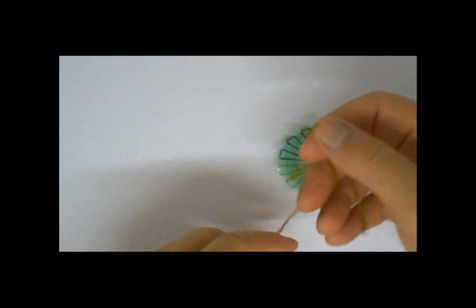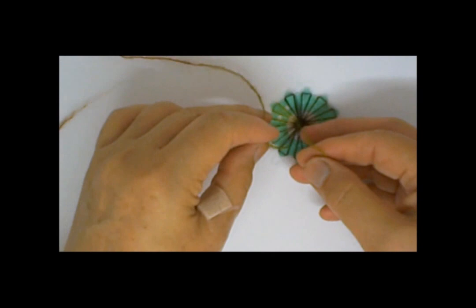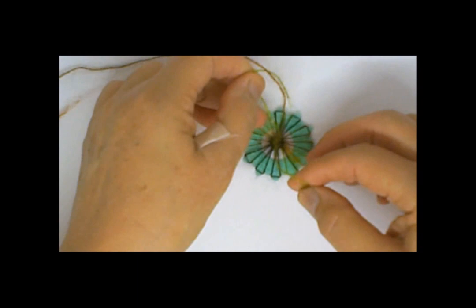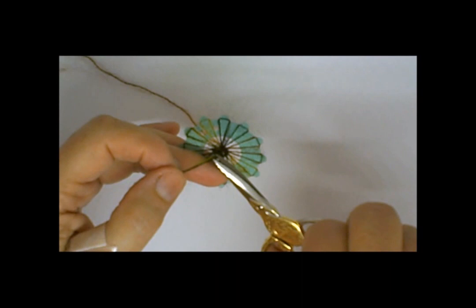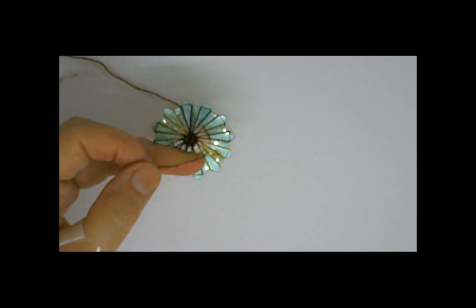Then we're going to tie a knot to secure it. This is mohair, so it's a bit grabby. Apologize if that's moving around a lot. Then we're going to cut our tails off.